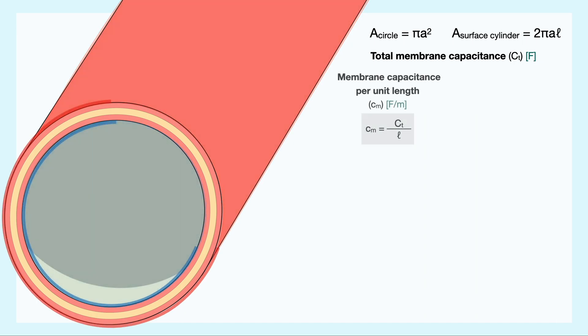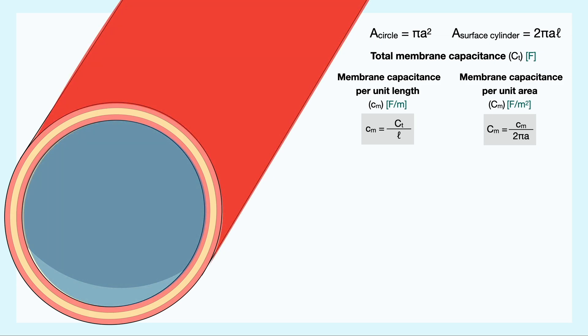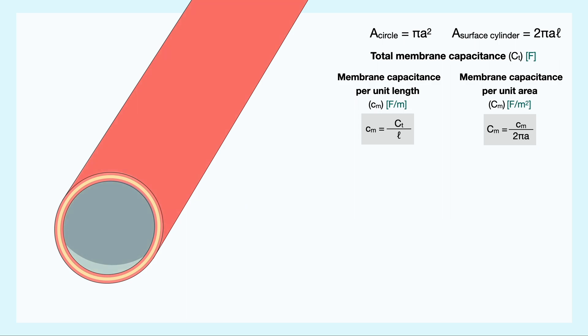we can determine the membrane capacitance per unit length, noted lowercase cm, by dividing the total capacitance by the length. We can also determine the membrane capacitance per unit area, also known as the specific capacitance, by dividing the capacitance per unit length by the circumference. This quantity is noted as uppercase Cm.